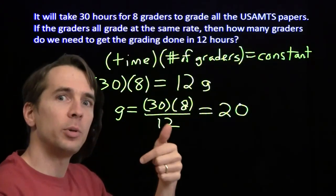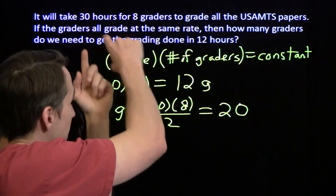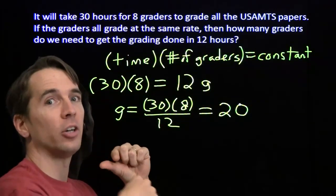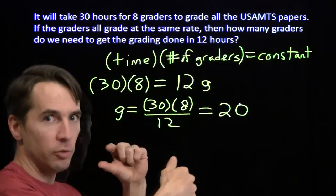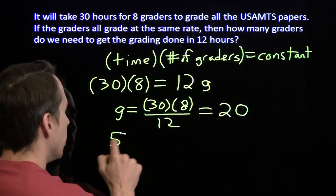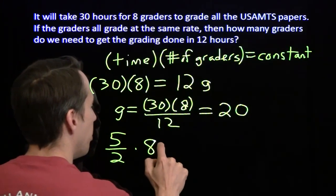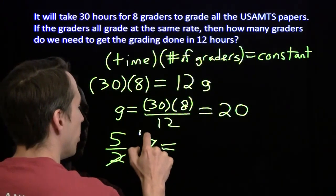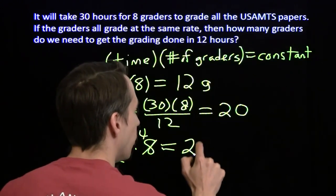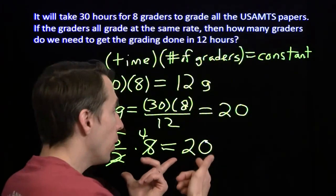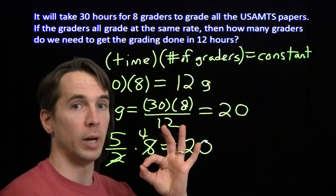If we scale down by a factor of 2 fifths, we need to take the graders up by a factor of 5 halves, because 2 fifths times 5 halves is 1. So we need to take our graders and multiply that by 5 halves. 8 divided by 2 is 4, 5 times 4 is 20. We've solved the same problem two different ways. We got the same answer both times. We know we're right.